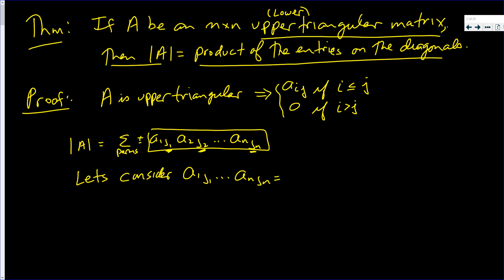This product will not be zero if and only if all the i's are less than or equal to the corresponding j's — that is, 1 is less than or equal to j1, 2 is less than or equal to j2, all the way down to n is less than or equal to jn.